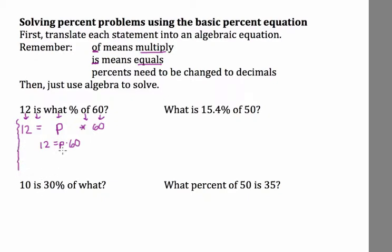Okay, so now I just have to solve for P. Undo what's been done to the P, so I just divide both sides by 60. P equals—use your calculator to do 12 divided by 60—you come up with 0.2. So now that's the decimal.